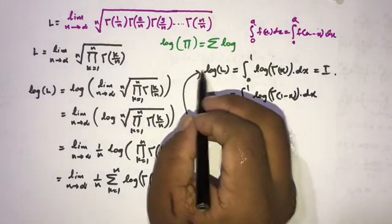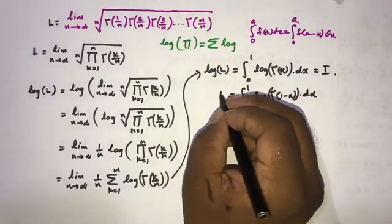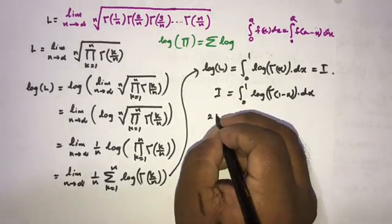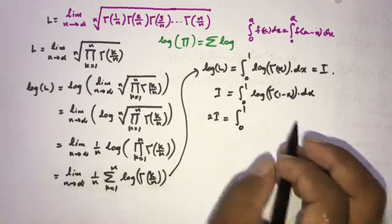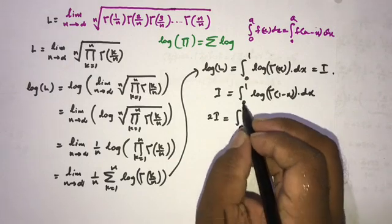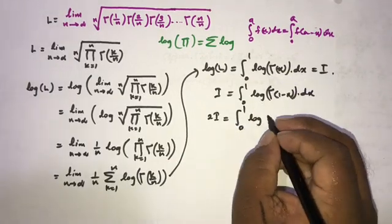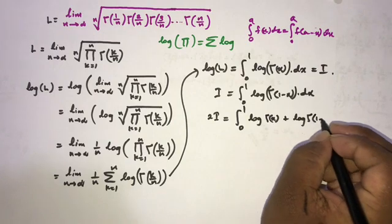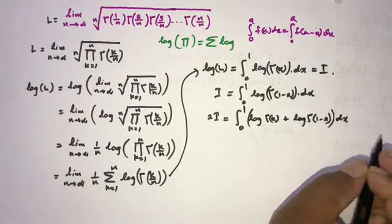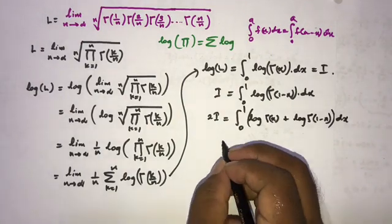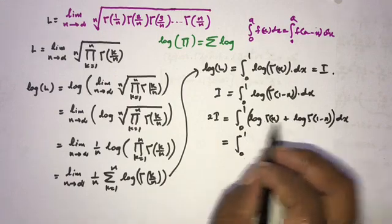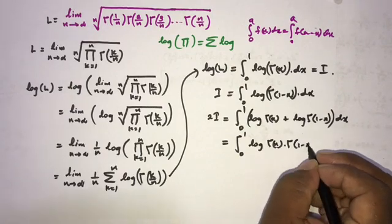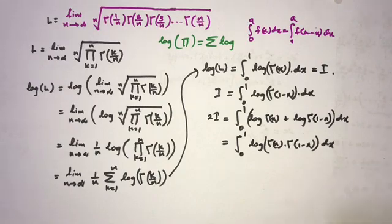So I equals the integral from 0 to 1 of natural log of gamma(x) dx, and also I equals the integral from 0 to 1 of natural log of gamma(1 minus x) dx. Adding these two gives 2I equals the integral from 0 to 1 of natural log of gamma(x) times gamma(1 minus x) dx, using the property that the sum of logs equals the log of a product.